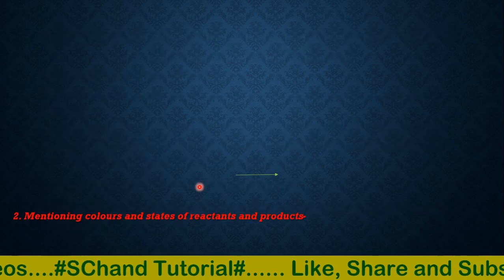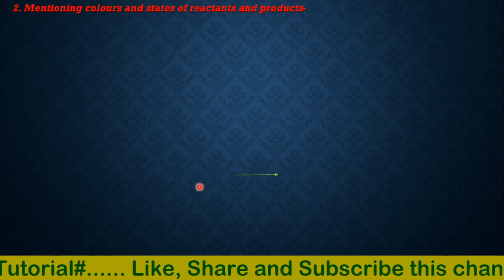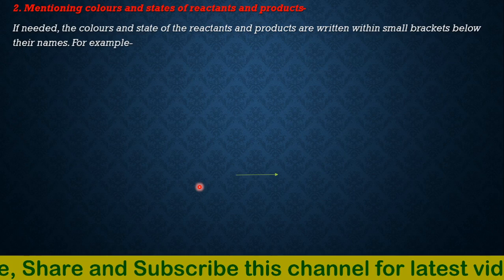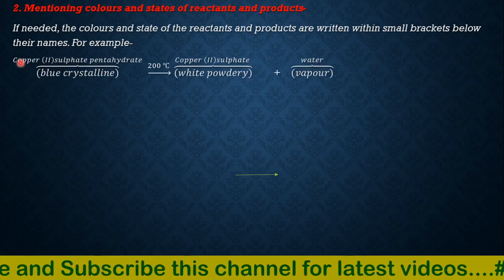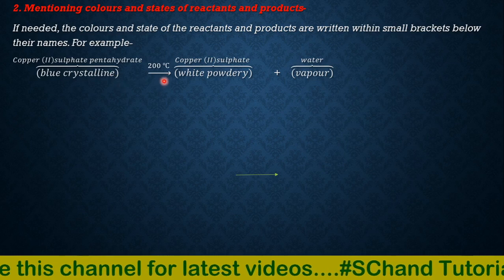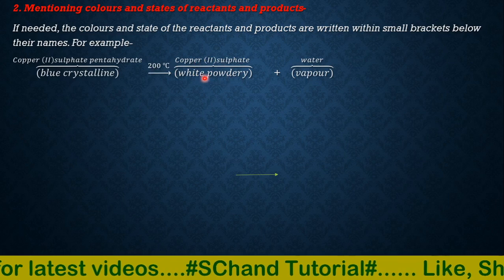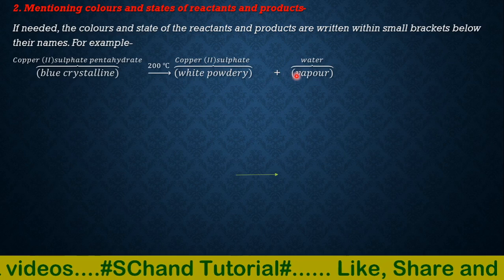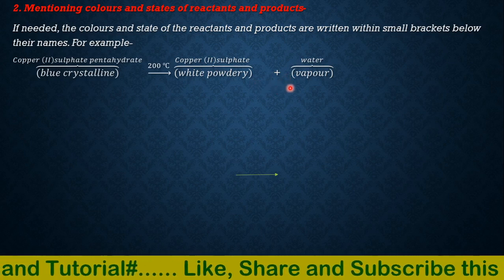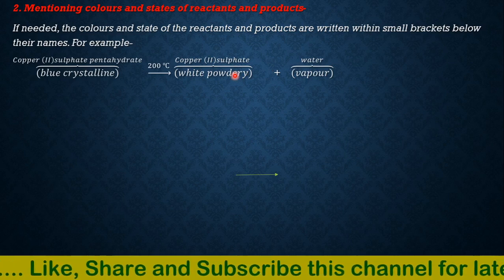The second step is mentioning the colors and states of reactants and products when needed. The colors and states are written within small brackets below their names. For example, copper(II) sulfate pentahydrate, which is a blue color crystal, when heated to 200 degrees Celsius changes into copper(II) sulfate, which is a white powder, and water vapor. So from the equation we can know the states and colors of the reactants and products.